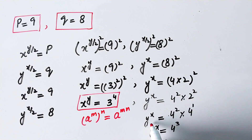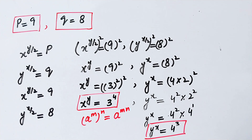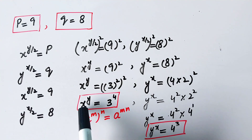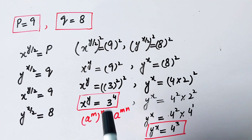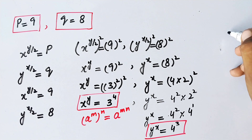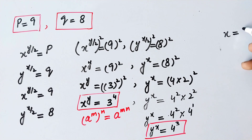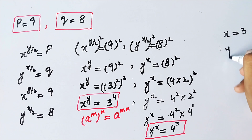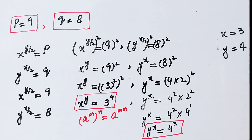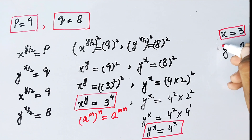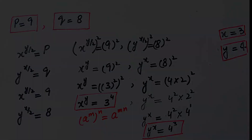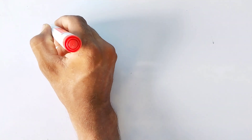We now have x^y = 3^4 and y^x = 4^3. Comparing, the base and exponent values show that x = 3 and y = 4. These are the values of x and y.